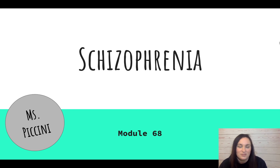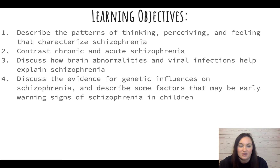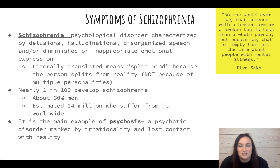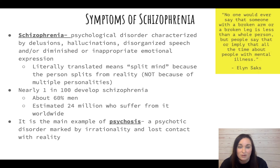Hi everyone, and welcome to Unit 12, Module 68. Today we are talking about schizophrenia. Here are your learning objectives and vocab. Schizophrenia is a psychological disorder characterized by delusions, hallucinations, disorganized speech, and possibly diminished or inappropriate emotional expressions. It really looks different in everyone and it varies.